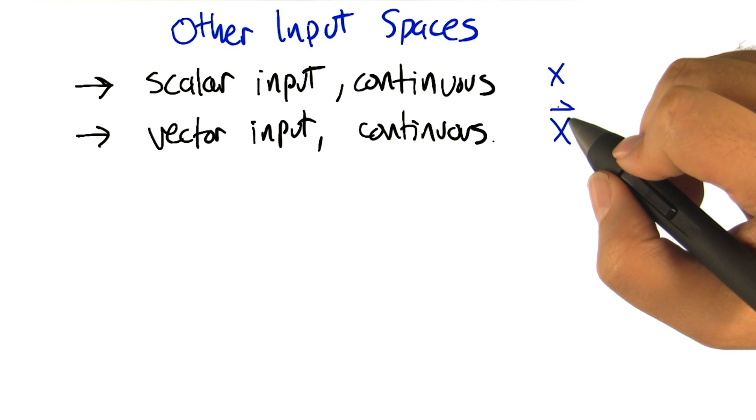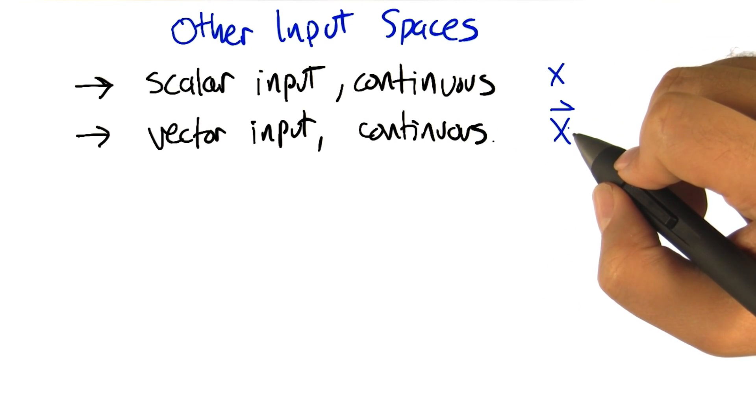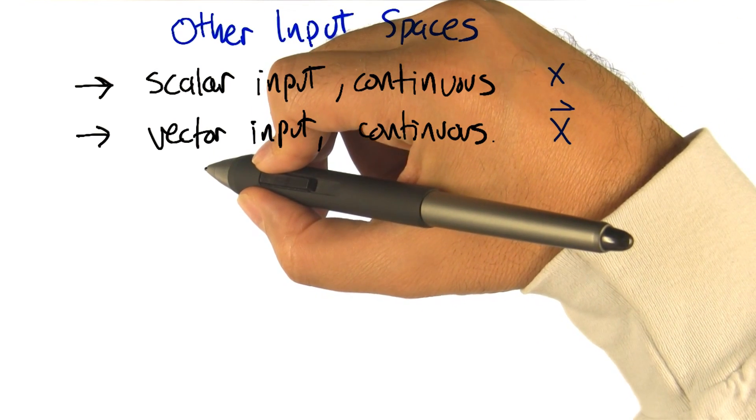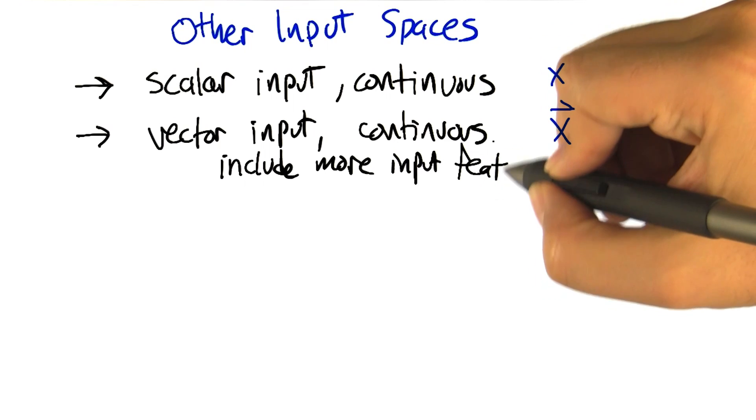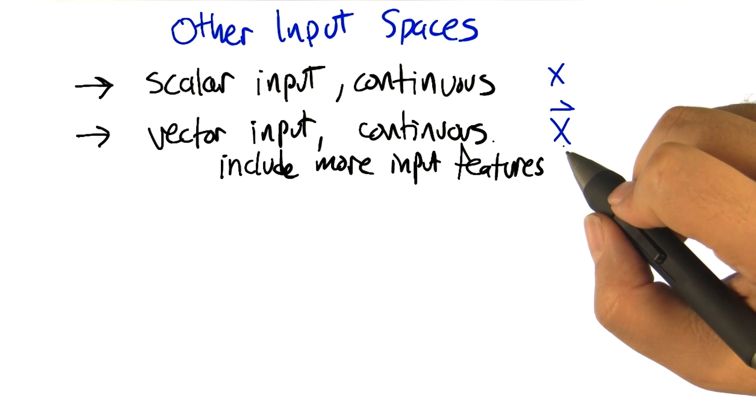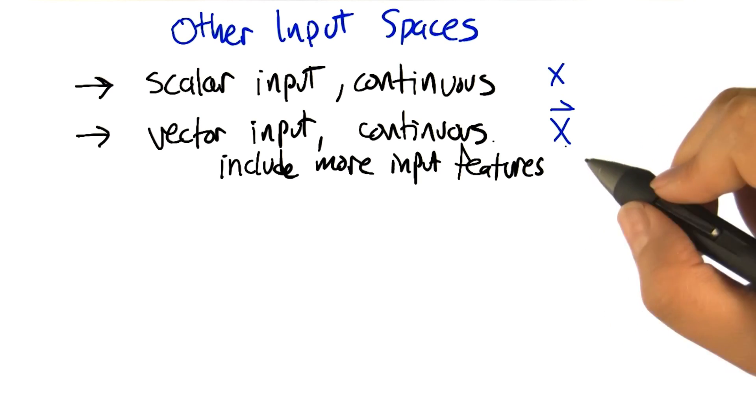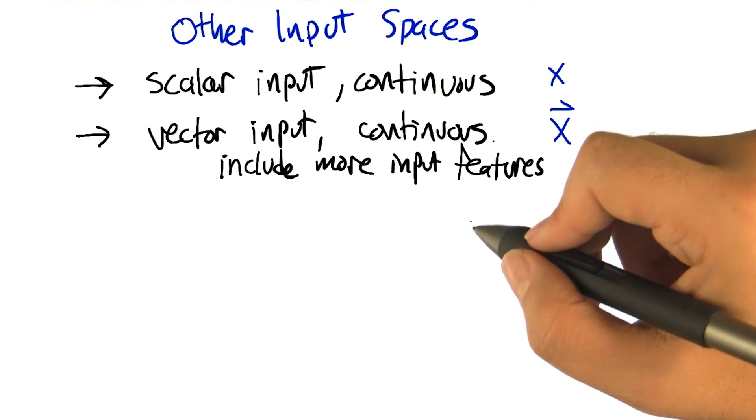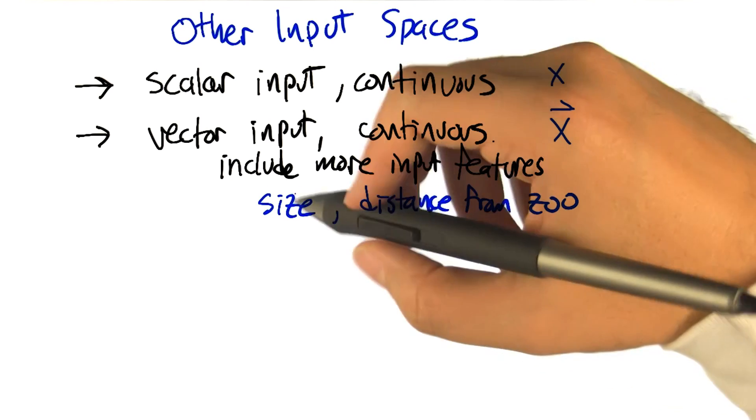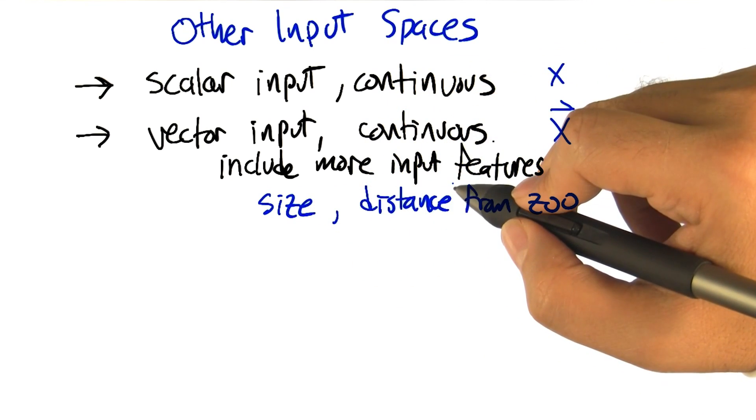So what might be an example of where we might want to use a vector input? A couple of things. One, if we look at the housing example, like we said earlier, there are a bunch of features that we weren't keeping track of. So we could have added some of those. We could include more input features and therefore combine more things together. But how would we do that? So let's say, for example, that we have two input variables that we think might be relevant for figuring out housing cost.